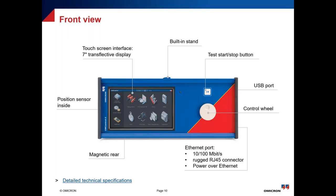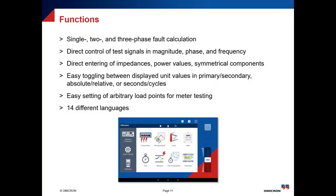The CM Control B has a control wheel to increase and decrease values gradually, and a keypad to enter values directly. Personally, I prefer the keypad because it lets you set the value straightforwardly. We also have a push button for injection — to start and stop — and a magnetic rear that enables attachment to any metallic surface. Test results can be stored on a USB stick memory attached to the device, or on your own flash memory.